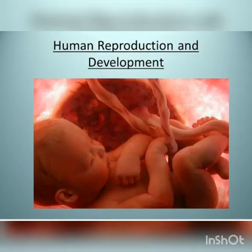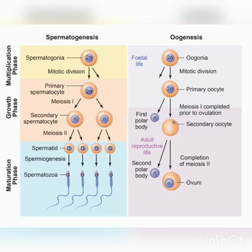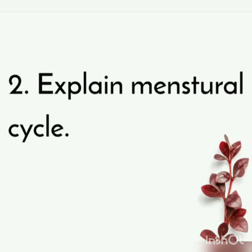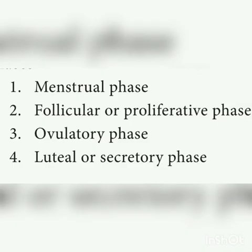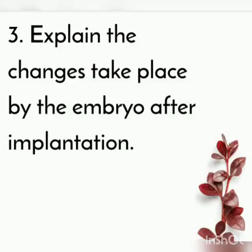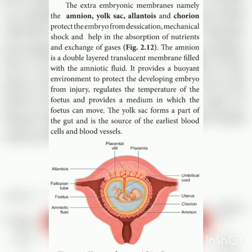In the second chapter, Human Reproduction, explain the process of gametogenesis — you have to explain both spermatogenesis and oogenesis. Next, explain the menstrual cycle: write what the menstrual cycle is and explain the four phases — menstrual phase, follicular phase, ovulatory phase, and luteal phase — with appropriate diagrams. Next, explain the changes that take place in the embryo after implantation: how the blastula is converted into gastrula, the functions of the extra-embryonic membranes (amnion, yolk sac, allantois, chorion), and the functions of the three germ layers — ectoderm, endoderm, and mesoderm.